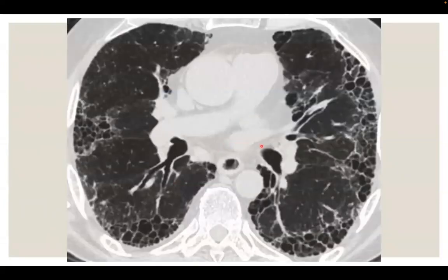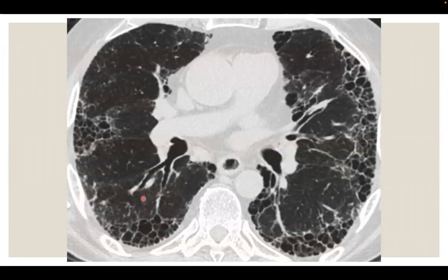The criteria of UIP for IPF is the presence of honeycombing and other fibrotic features like traction bronchiectasis and bronchiolectasis, seen only subpleural with no bronchocentric distribution, absence of ground glass or reticulation or traction bronchiectasis in bronchocentric distribution. As shown in this image, with an apico-basal gradient of increasing fibrosis and honeycombing from upward to downward — this is called the apico-basal gradient.